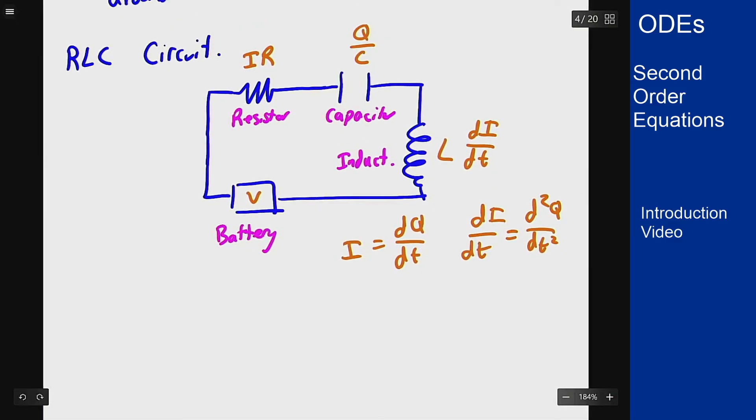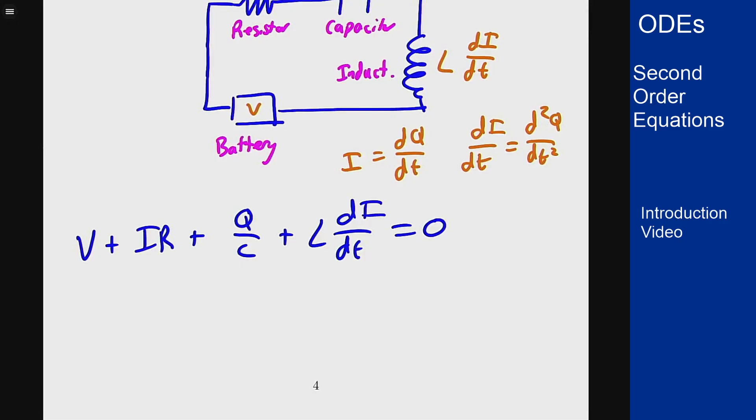And now if all of these voltage drops must add to zero, then we get something like the following. We get that V plus iR plus q over C plus L di/dt equals zero.